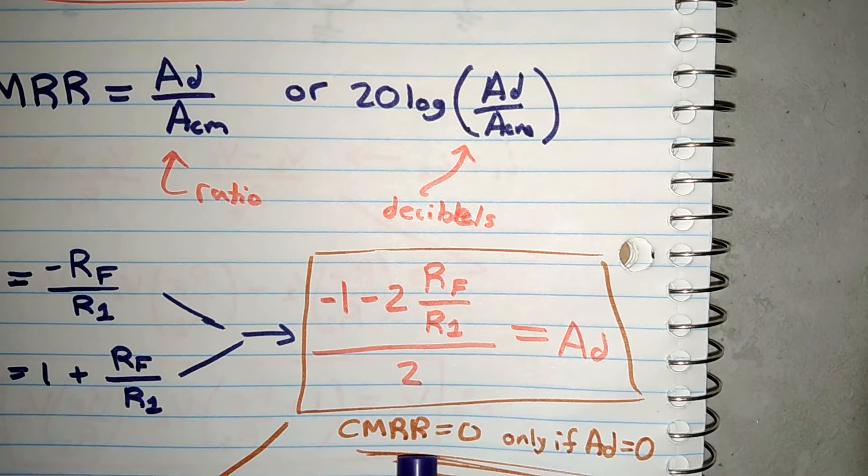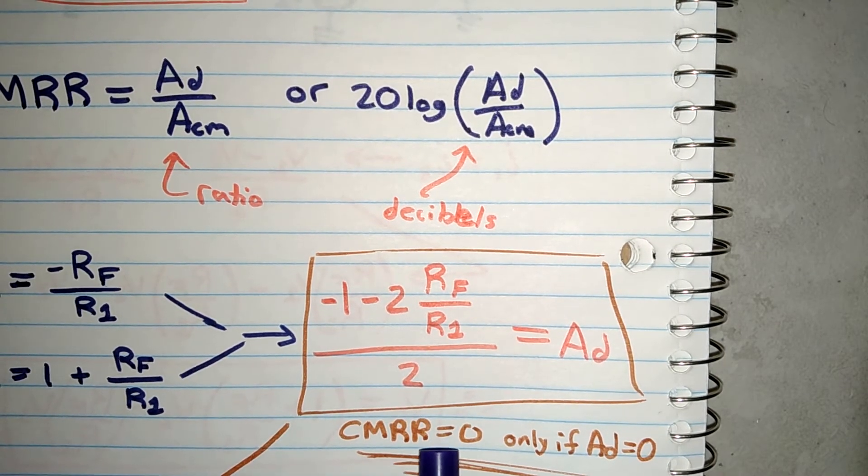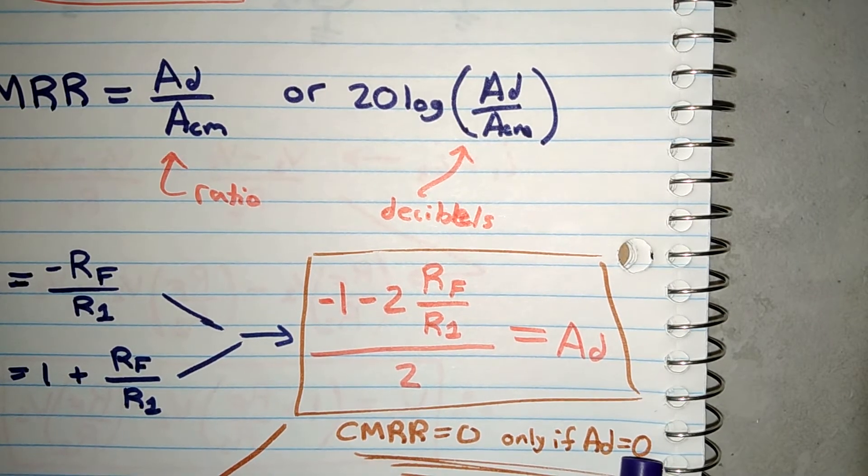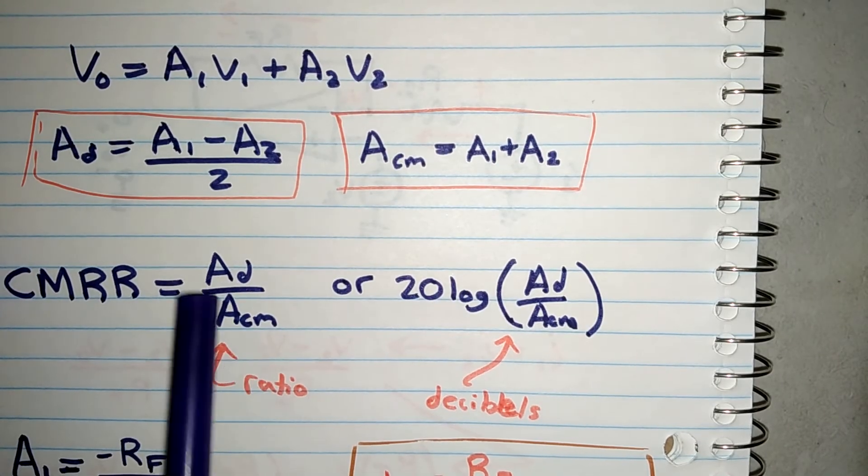The common mode reduction ratio will only be 0 if the differential gain is 0, by using this equation over here.